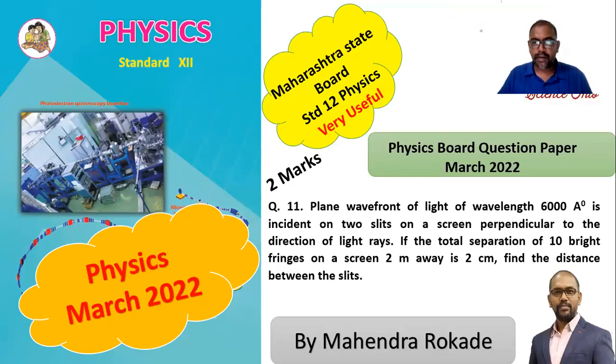This is a question from March 2022, a problem on interference. Plane wavefront of light of wavelength 6000 Angstrom is incident on two slits on a screen perpendicular to the direction of light rays. The total separation of 10 bright fringes on a screen two meters away is two centimeters. Find the distance between the slits.